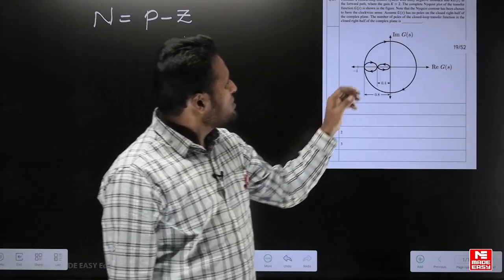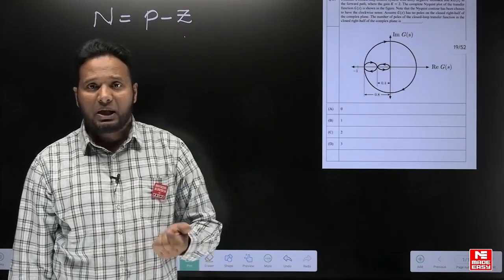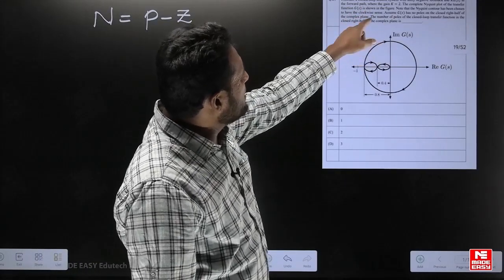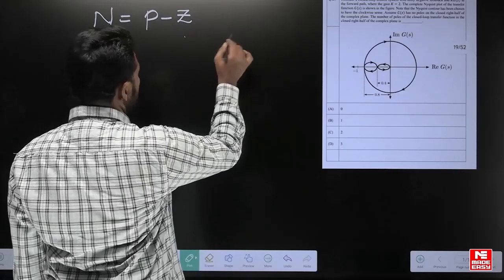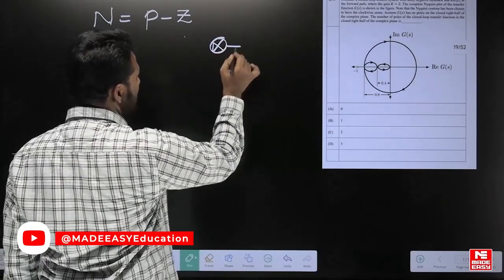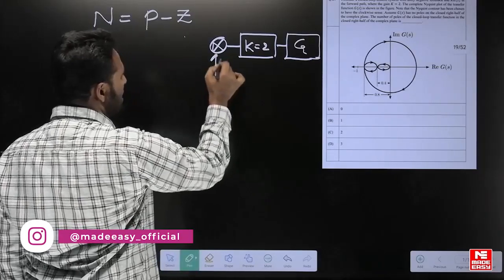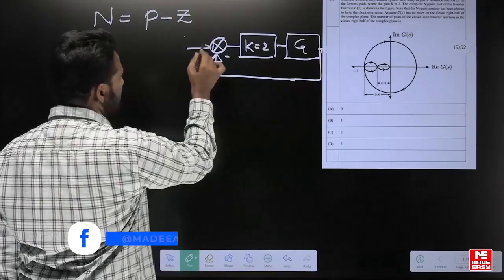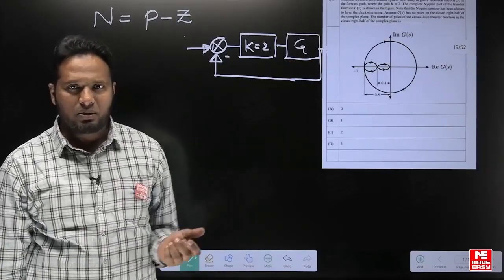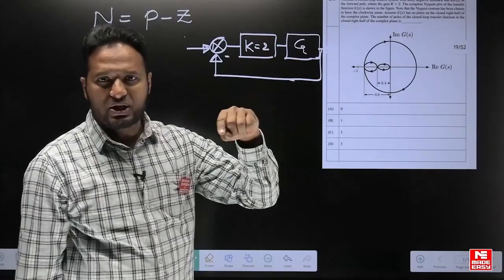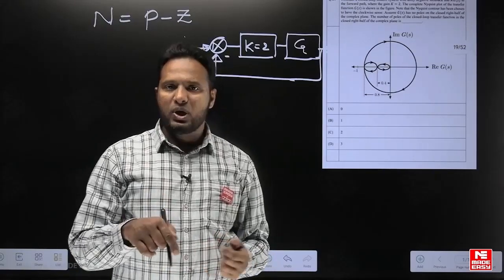The question: consider a closed-loop control system with unity negative feedback and K·G(s) in the forward path, where K = 2. The complete Nyquist plot of the transfer function G(s) is given in the figure. This is a bit tricky — we are given K = 2 but the Nyquist plot is of G(s), not K·G(s). This means the plot was drawn with K = 1. So we need to account for the effect of changing K from 1 to 2.